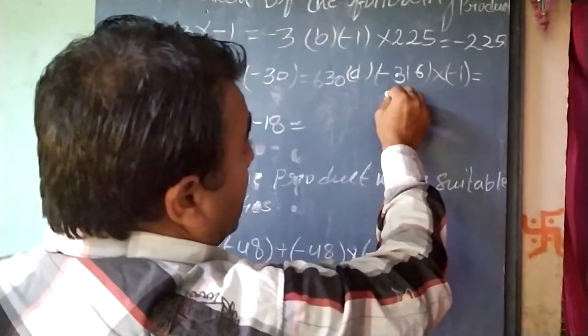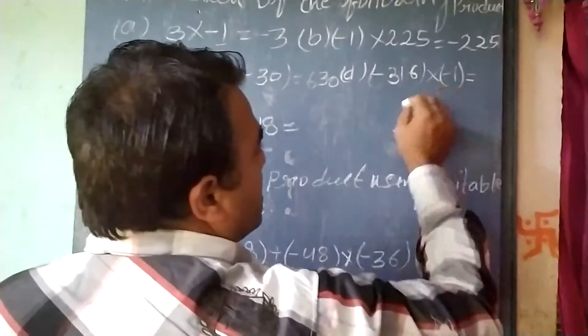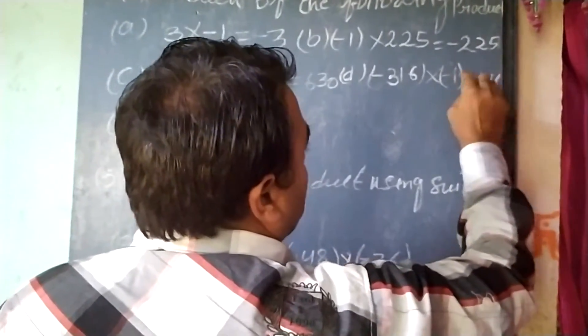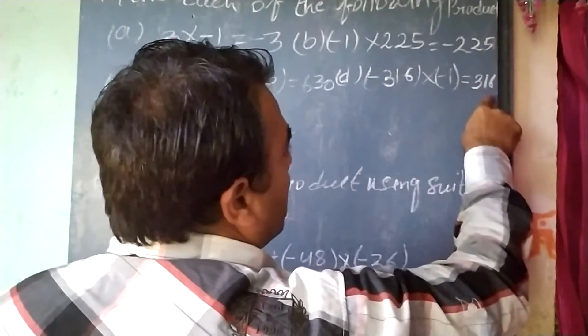Here, minus 316 multiplied by minus 1 gives 316. As negative multiplied by negative will give a positive number.